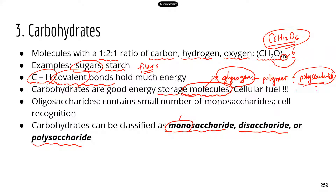Mono means one, so a monosaccharide is a single sugar unit — such as glucose or fructose. Di means two, so a disaccharide is when the molecule is made up of two monosaccharides. Poly means many, so polysaccharide molecules usually have many monosaccharides in their structure. We also have oligosaccharides — oligo means a few but not too many.